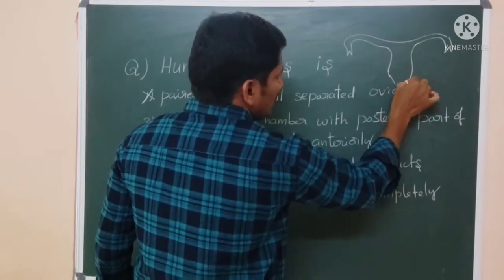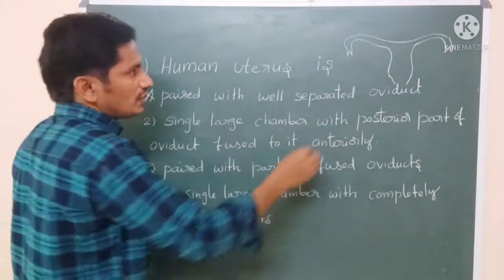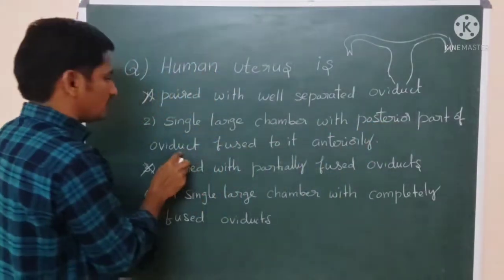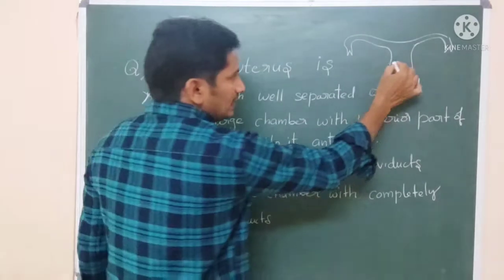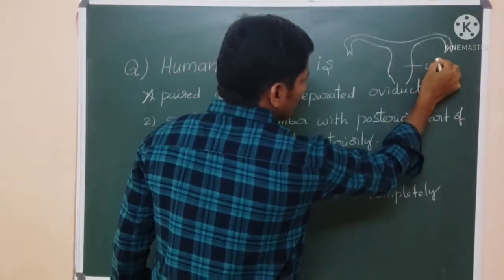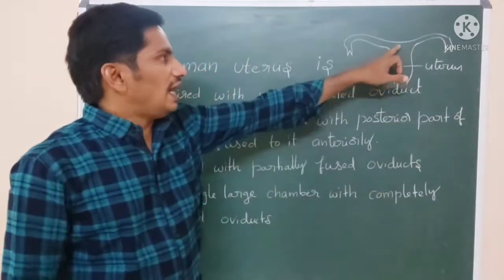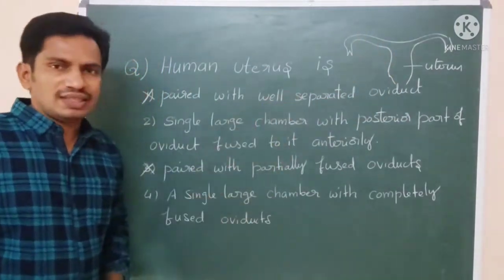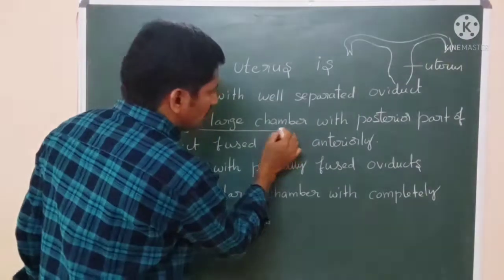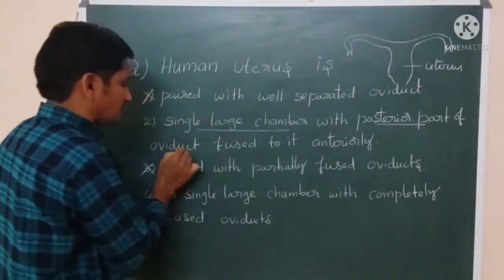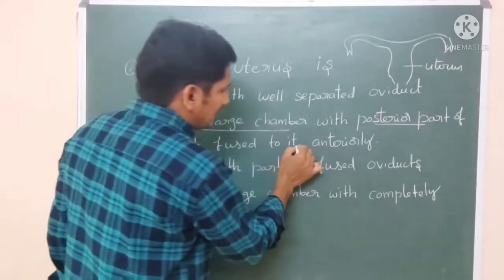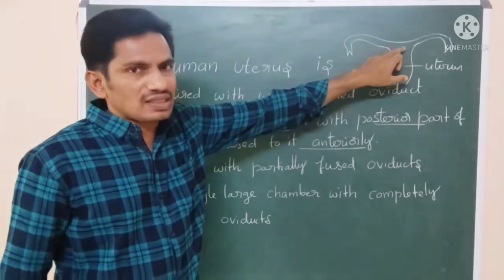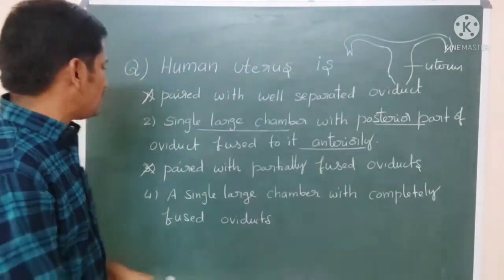Here is the oviduct, and here is the uterus. The uterus has a single large chamber with the posterior part of the oviduct fused to it anteriorly. The anterior part consists of the fundus, body, and cervix — these three regions are present in the uterus. Single large chamber is correct, and the oviduct's posterior part is fused anteriorly. This is the correct answer.